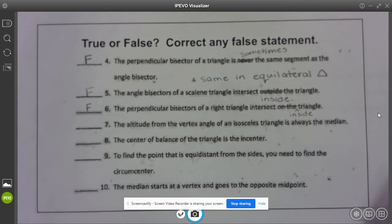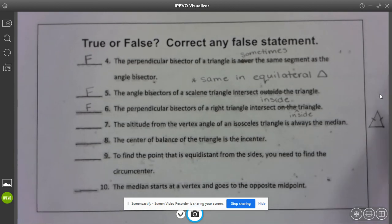Altitude from the vertex angle of an isosceles triangle is always the median. Well let's draw ourselves a picture. If I have an isosceles triangle, it helps if it's not in the way, if I drop down a median, well...